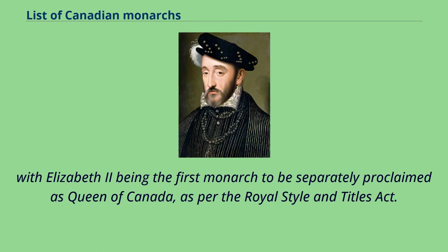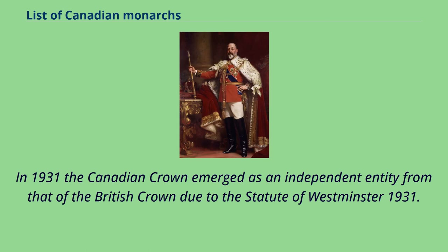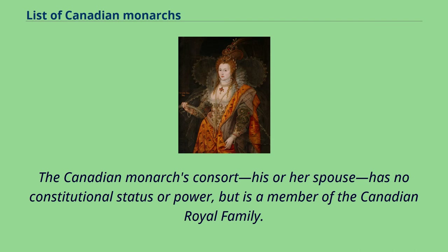With Elizabeth II being the first monarch to be separately proclaimed as Queen of Canada, as per the Royal Style and Titles Act. In 1931, the Canadian crown emerged as an independent entity from that of the British crown due to the Statute of Westminster 1931. The Canadian monarch's consort — his or her spouse — has no constitutional status or power, but is a member of the Canadian royal family.